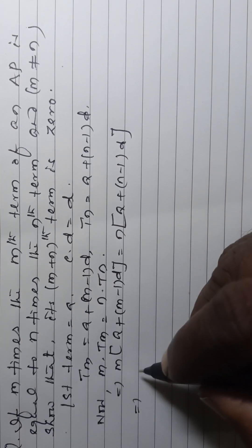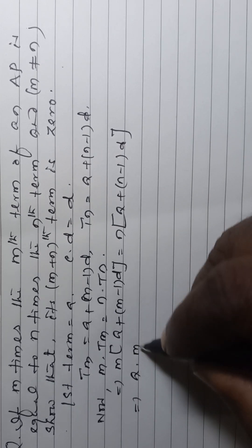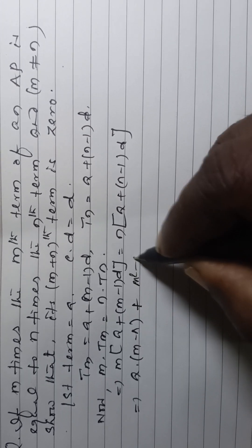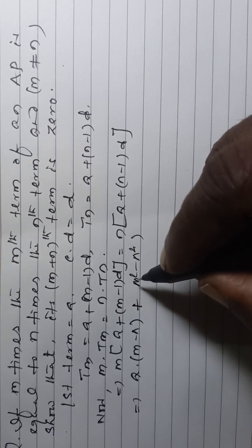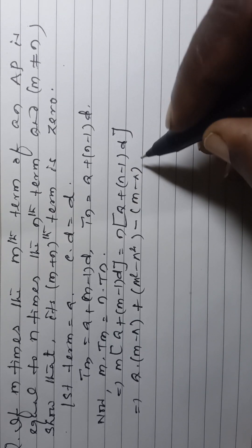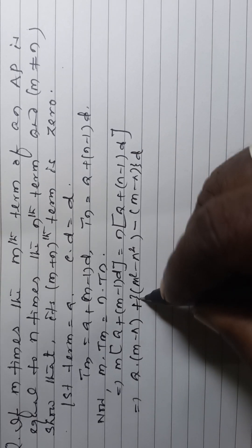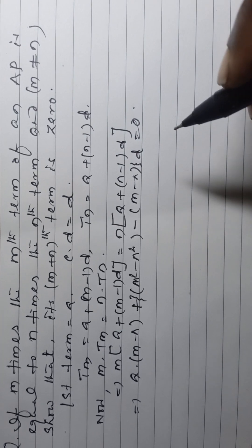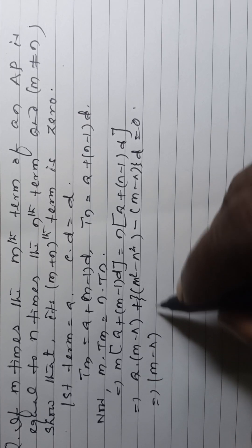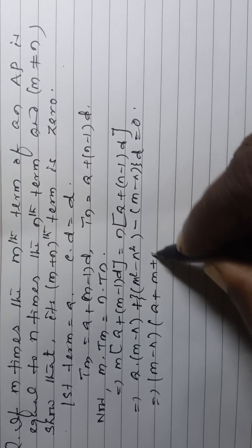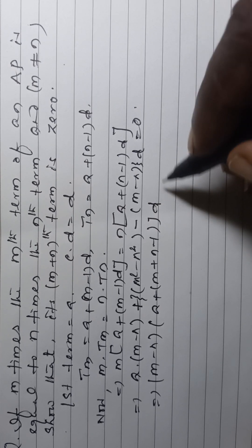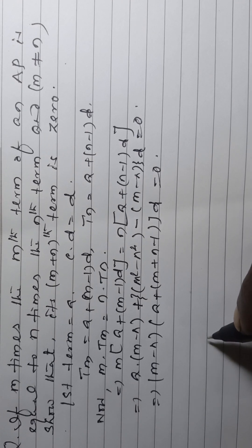Expanding, we get: a(m minus n) plus (m squared minus n squared) minus (m minus n) into d equals 0. Simplifying, this means a plus (m plus n minus 1)d is equal to 0.